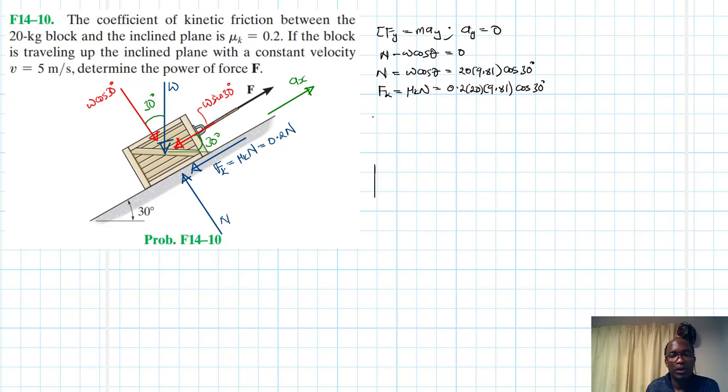Right, so we know that power is just equal to the work done divided by the time, and the work done itself is equal to the force vector times the displacement vector times cosine θ, θ being the angle between the force and the displacement vector, and then divided by the time. But we know that this is equal to speed, therefore this becomes F cos θ times the speed.